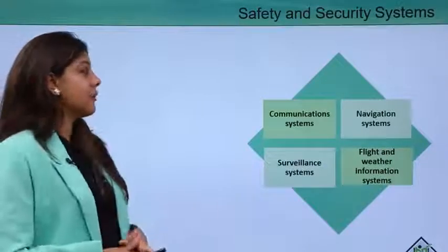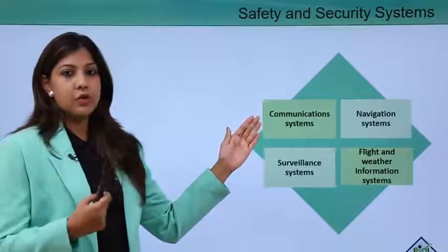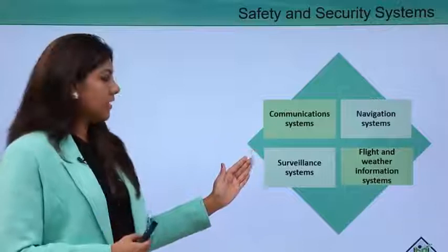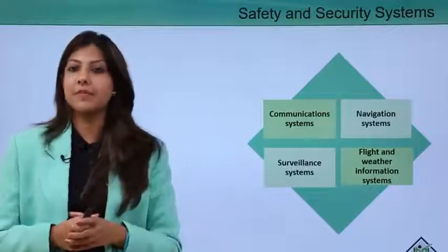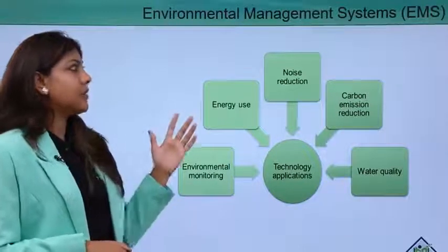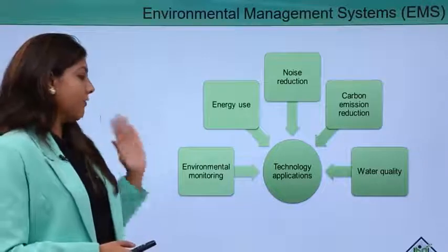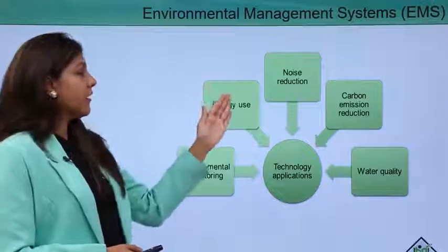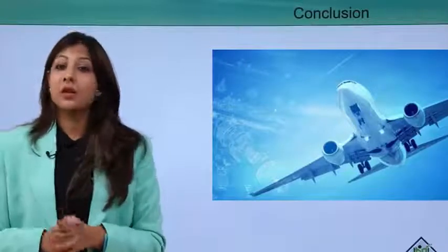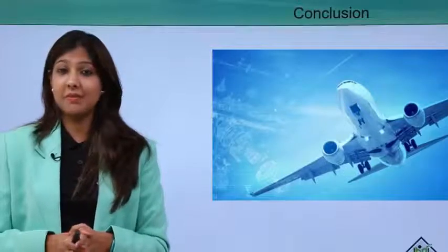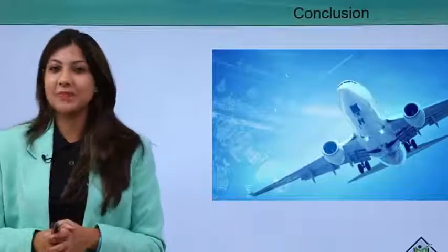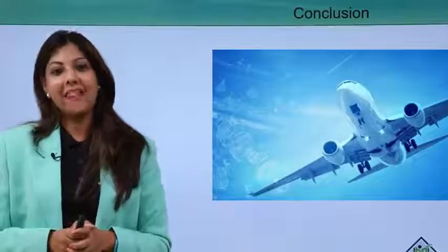Safety and security systems include communication systems, which are critical in aviation; navigation systems used by pilots; surveillance systems used by security staff; and flight and weather information systems used by pilots and co-pilots in coordination with the air traffic controller (ATC). Environmental management systems cover environmental monitoring, energy use, noise reduction, carbon emission reduction, and water quality. This concludes the module on inflight communication systems, covering the many different departments involved in aviation.